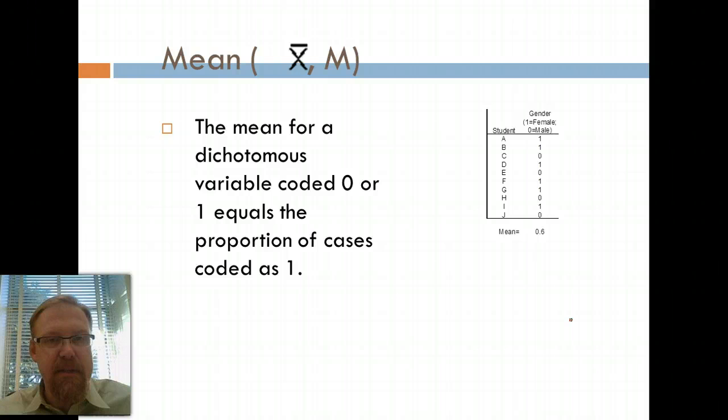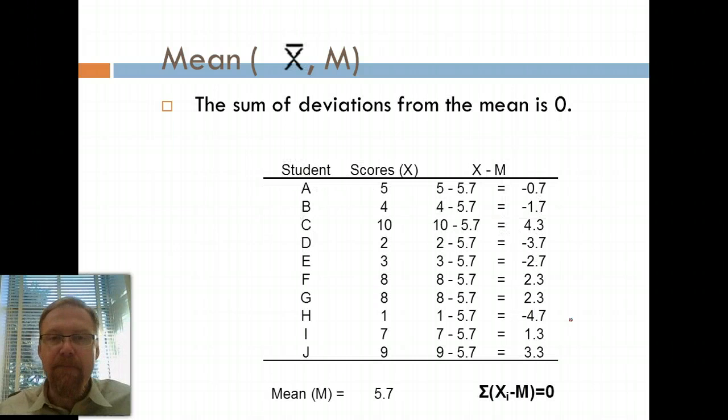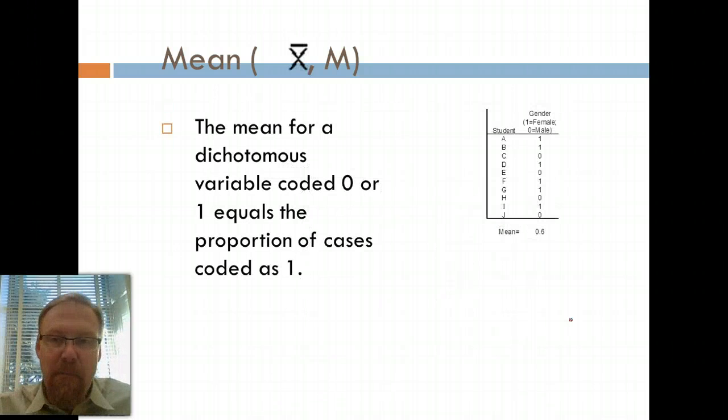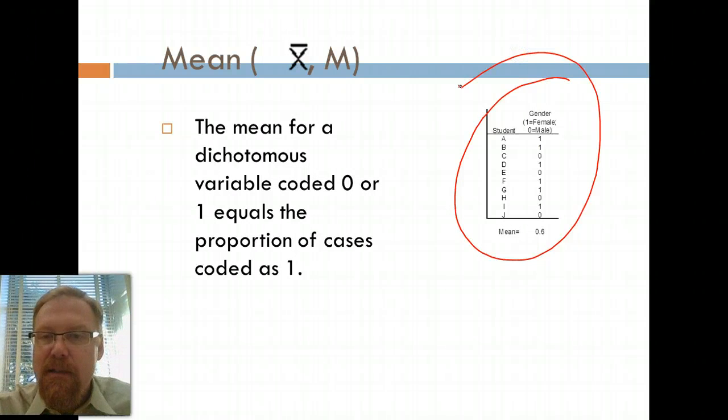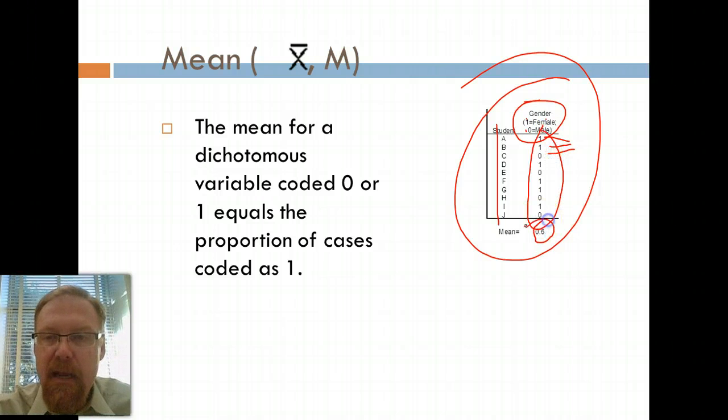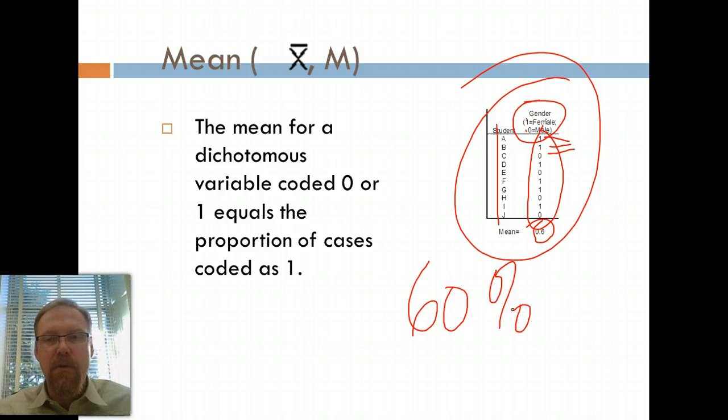Now here's that special case I was telling you about. The mean for a dichotomous variable coded 0 or 1 equals the proportion of cases coded as 1. This is the same example. If I have female equals 1 and male equals 0, and I've got a set of students and I've coded them 1 for female, 0 for male, and I take the average or the mean of all that, I come up with 0.6. That tells me that 60% of my student group is female.